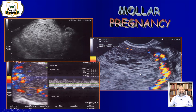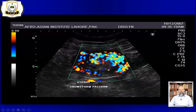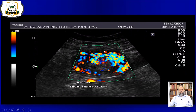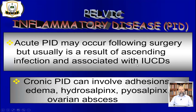In molar pregnancy, there will be a snowstorm appearance on grayscale. On color Doppler, the mole compresses vessels, increasing their velocity. The resistive index is 0.400. This is another case showing the snowstorm appearance characteristic of molar pregnancy.